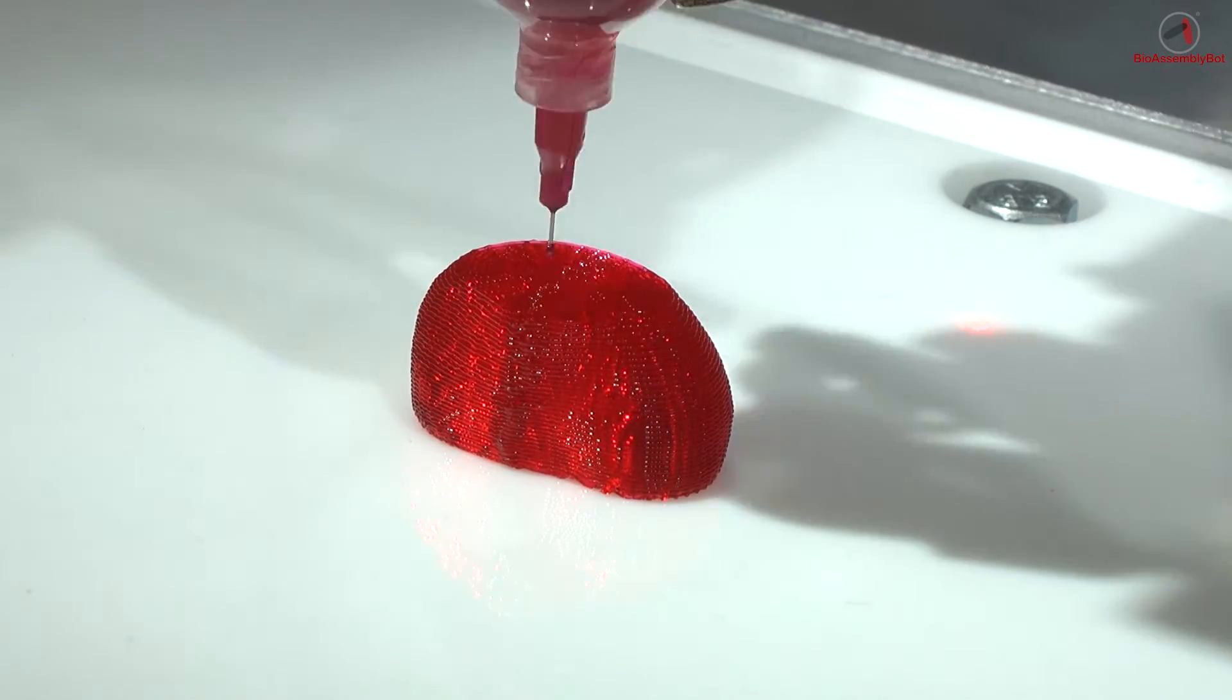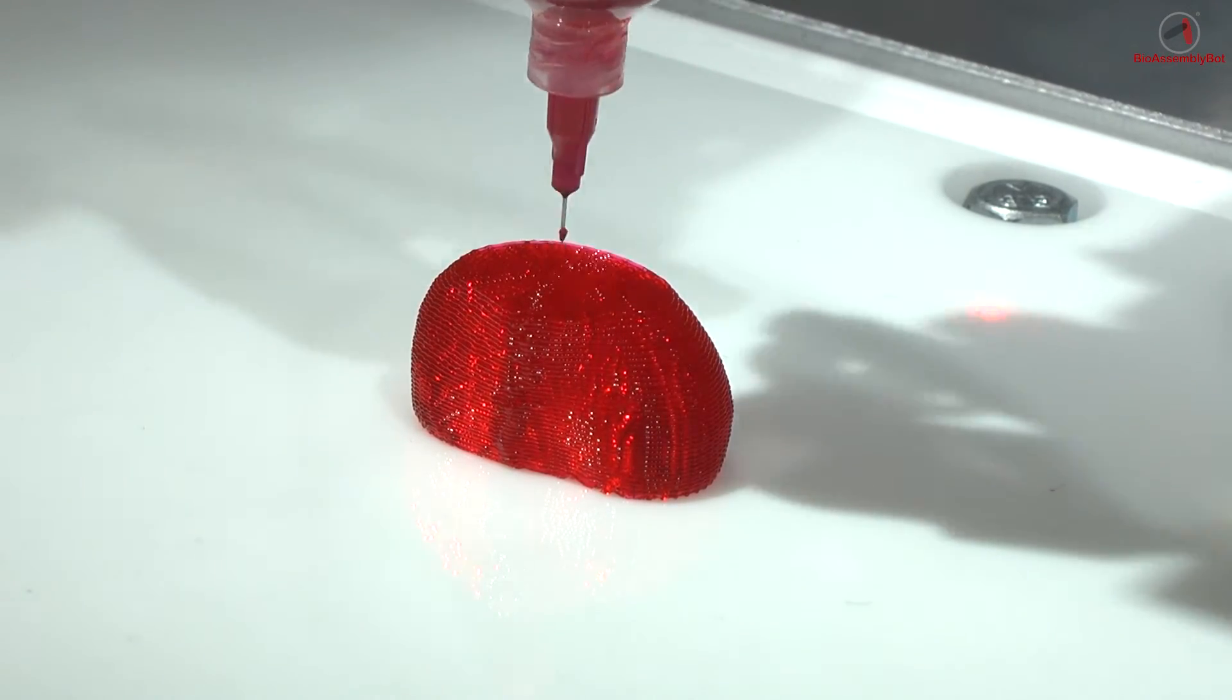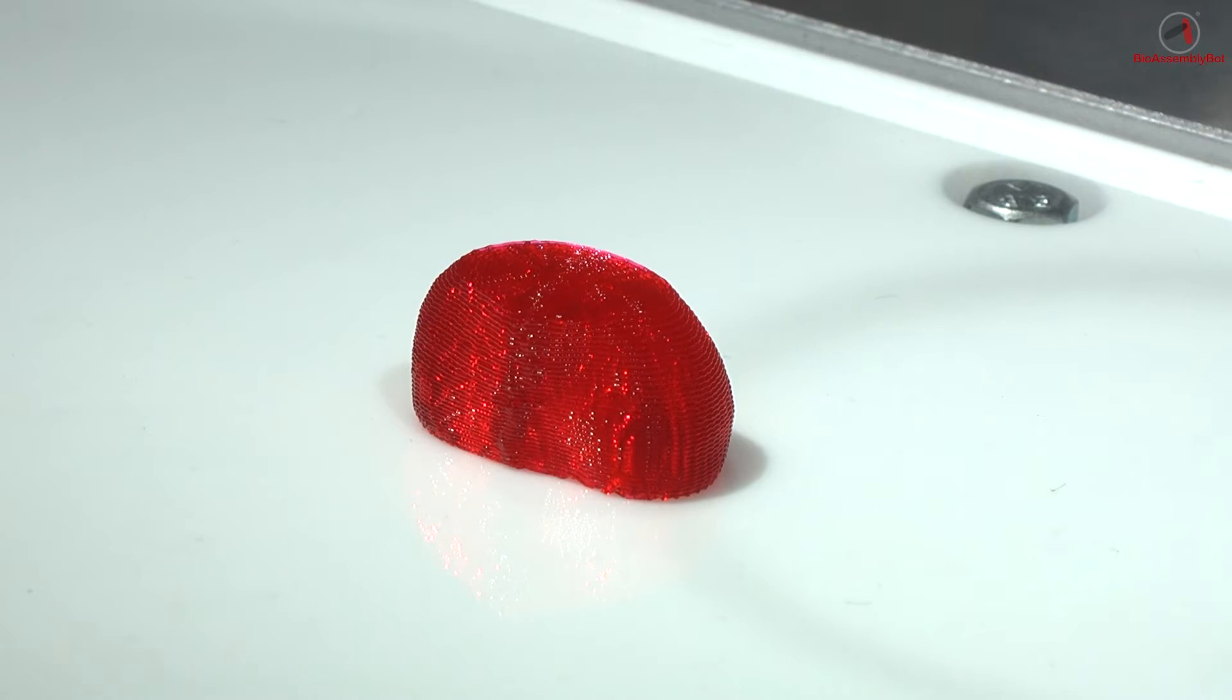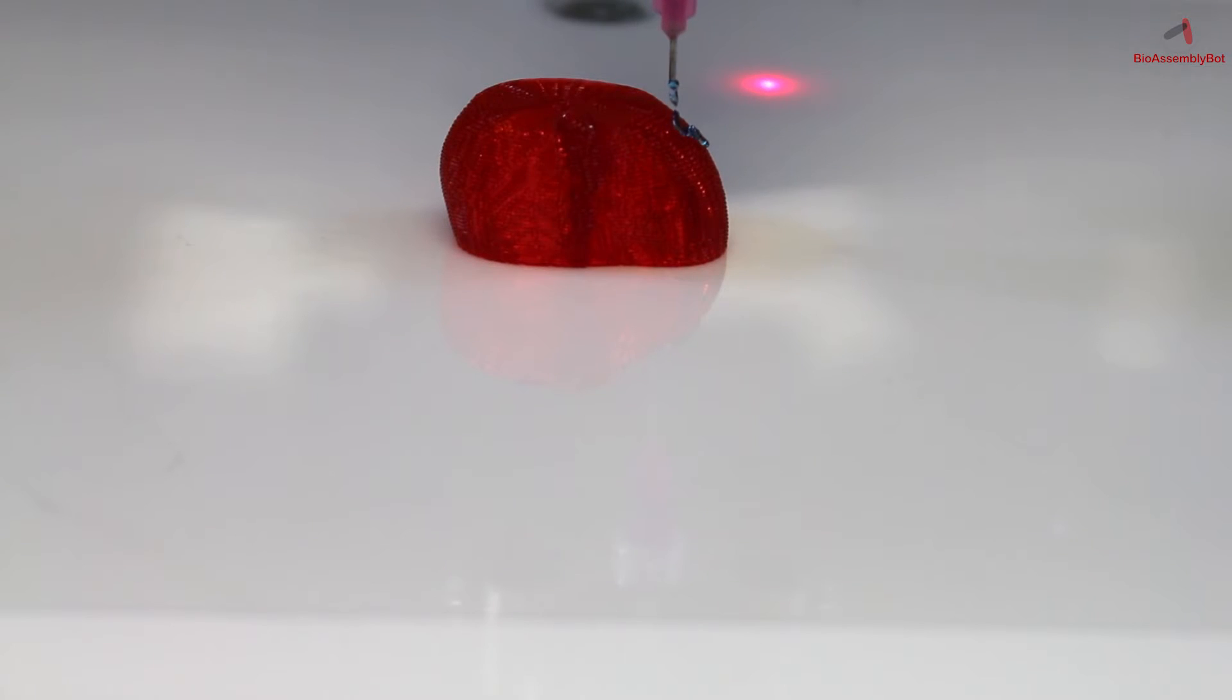BAB will move over to the material rack, grab the appropriate blood vessel material or cartridge, and then move back to this printed heart structure and add the vessels to the curved surface of the heart. Those vessels will be seen in blue.